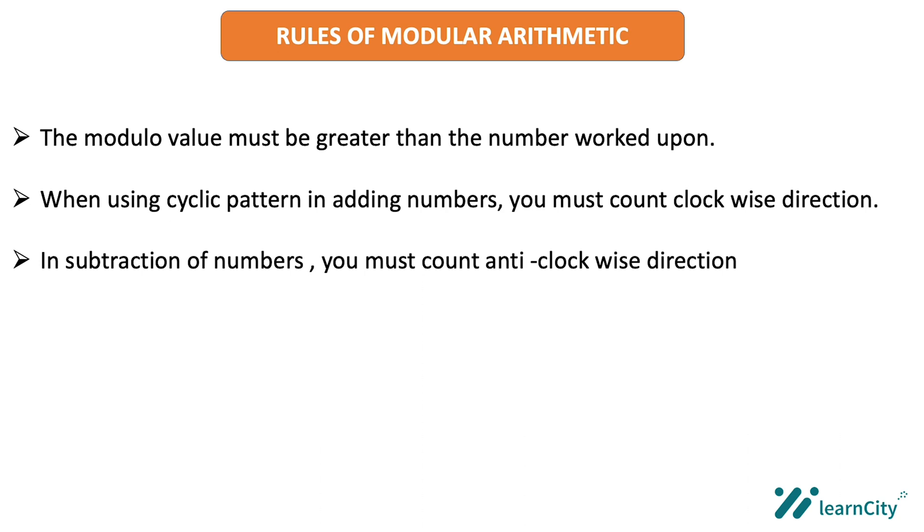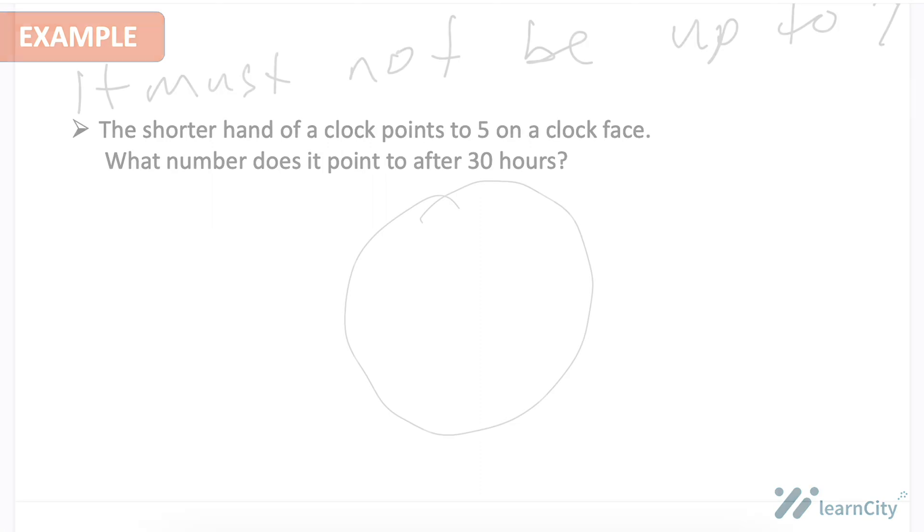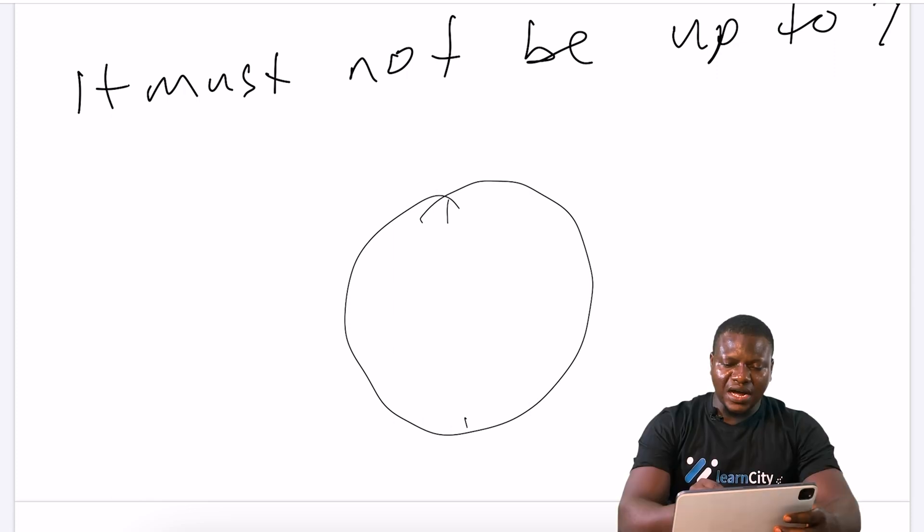Now let us consider example one. The short hand of a clock points to five on a clock face. What number does it point to after 30 hours? What this means is that we have our clock. We all know that our clock is divisible into 12 parts. So we have 12, one, two, three, four, five, six, seven, eight, nine, ten, 11 and 12.